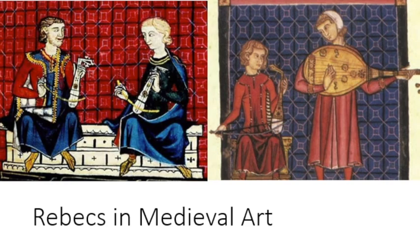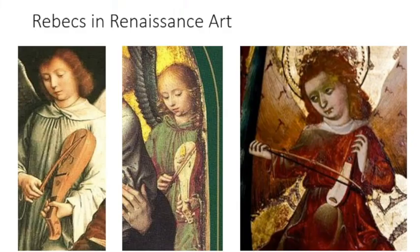Along with bagpipes, kettledrums, and, believe it or not, the use of a bow for playing stringed instruments. The rebeck could have three to five strings, frets or no frets, and be played on or below the shoulder or between the knees.